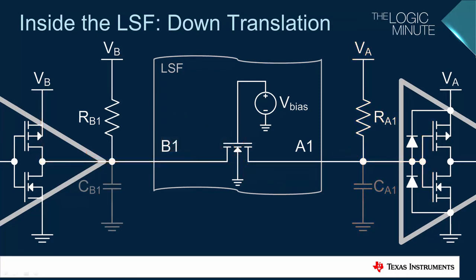There are special circumstances that allow the removal of one or both of the pull-up resistors. If the signal is always going to be down-translated from a push-pull transmitter, then the resistor RB1 can be removed. If the leakage current into the receiver is less than 1 microamp, then the resistor RA1 can also be removed.